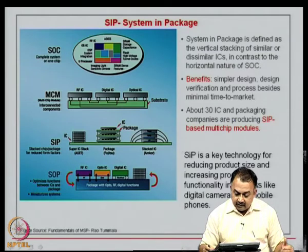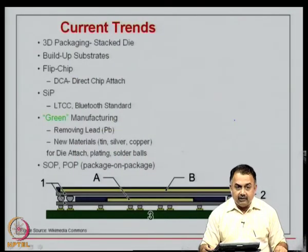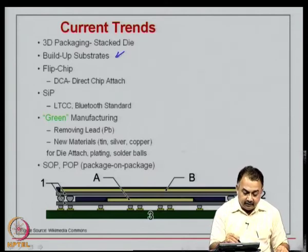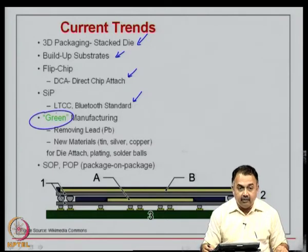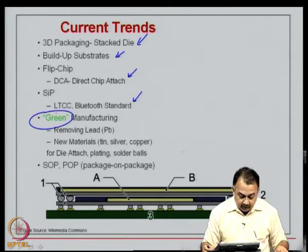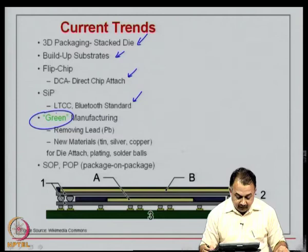To summarize the initial chapters, current trends are 3D packaging, build-up substrates, flip chip, direct chip attach, system in package, and towards the end of this course, we talked about green manufacturing. As a designer, you should also think about removing lead from your assembly and try to use new materials, looking for new concepts in plating or die attach materials. Remember these three important terms: design for manufacturing, design for reliability, and design for testability.